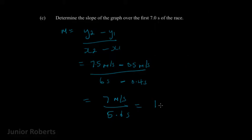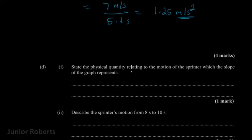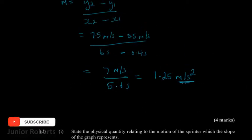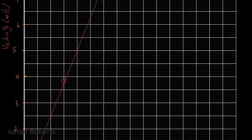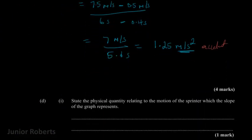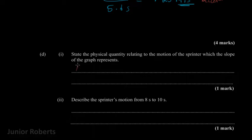We get 1.25 meters per second squared — we're dividing meters per second by seconds so our unit is meters per second squared. The question then says: state the physical quantity relating to the motion of the sprinter which the slope of the graph represents. Since we plotted velocity against time, the slope of a velocity-time graph always gives us the acceleration. So the answer is acceleration.